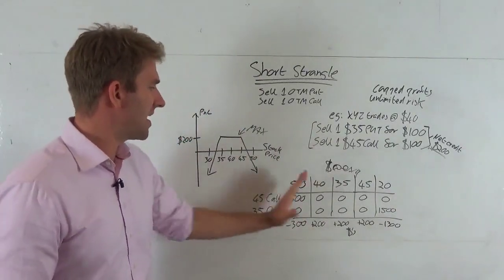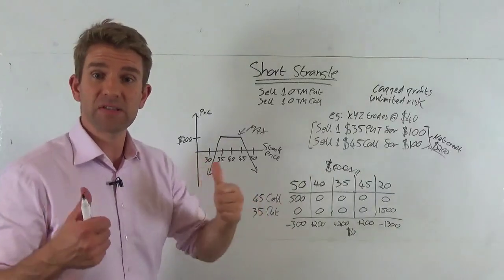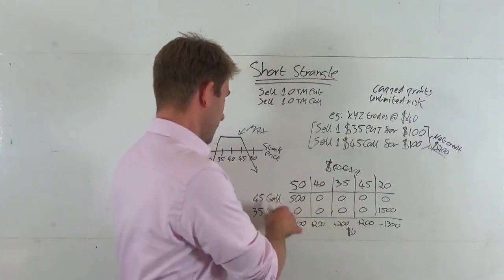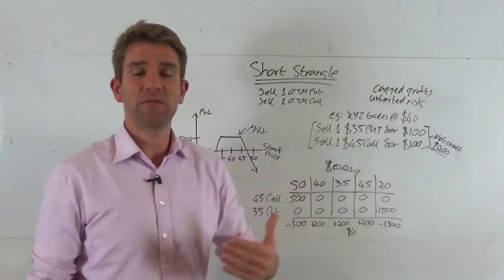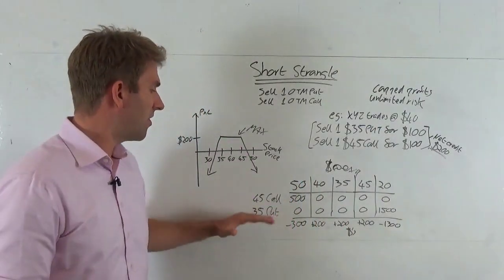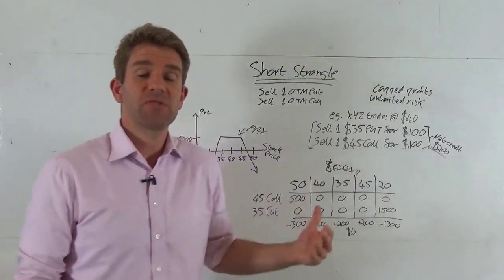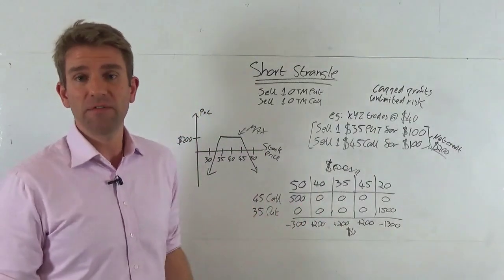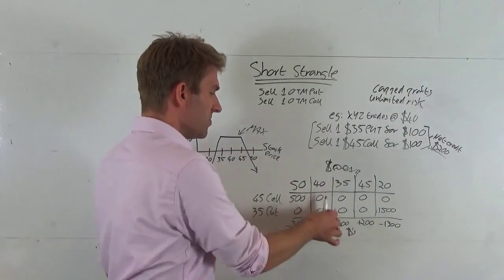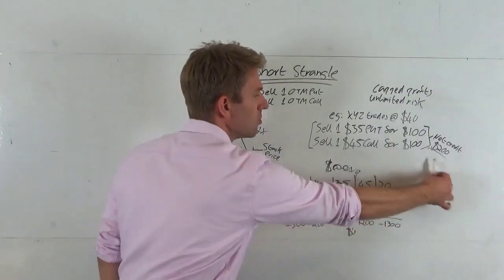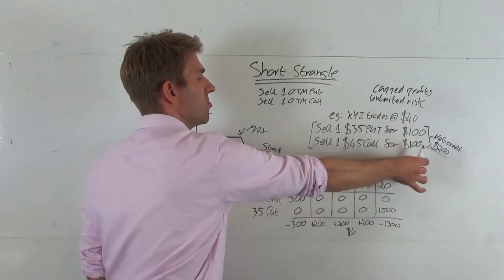Let's say the stock does nothing, stays at $40. Great, that sounds great because your $45 call is worth nothing. You've got the right to buy something at $45 that's trading at $40, zip. What about a $35 put? Well again that's worth nothing. You've got the right to sell something at $35 that's currently trading at $40, there's no value in that.